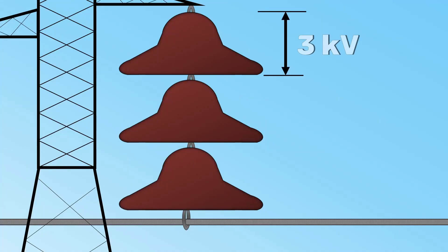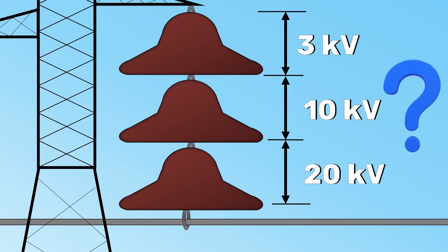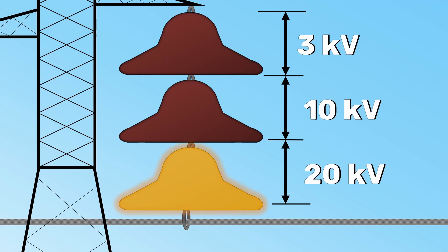Let me give you an example. If the voltage across the disc is 3 kV, 10 kV and 20 kV, which one do you think will get punctured? The disc which experiences 20 kV electrical stress will get punctured.